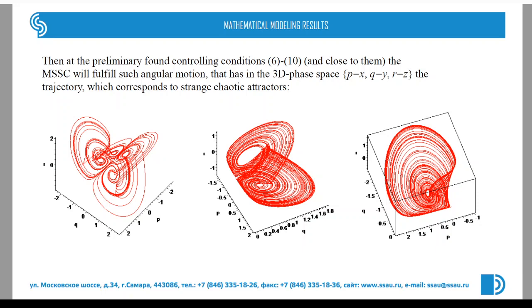If we speak about the 3D phase space P-Q-R, then you can see the phase trajectory as presented in the figures. These are strange attractors.